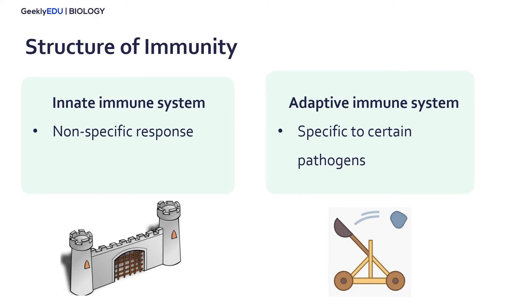Before watching this video, as in that video I described the two main broad systems within our immune system, which are the innate immune system, for all nonspecific responses — so to act against all diseases or pathogens — and then also the adaptive immune system, which is specific to certain pathogens or disease-causing agents. You can think of the innate immune system as a castle wall defending against all outside invaders, and the adaptive immune system as something more specific, such as a catapult aimed at fighting a certain group of people.